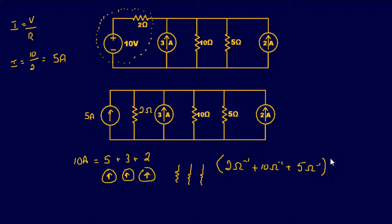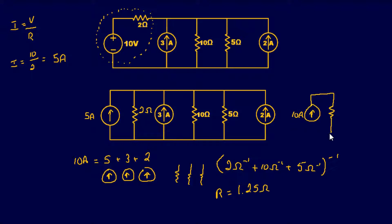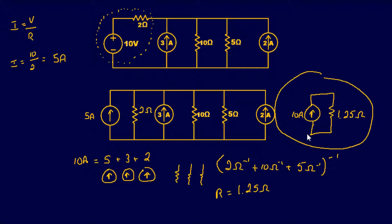For the resistors in parallel — 2 ohms, 10 ohms, and 5 ohms all in parallel — plugging that into the calculator gives us a resistance of 1.25 ohms. So by adding all the currents we get 10 amps total, with a resistance of 1.25 ohms. This gives us a Norton equivalent circuit of 10 amps in parallel with 1.25 ohms — simple, instead of using mesh analysis which could take 10 to 15 minutes.